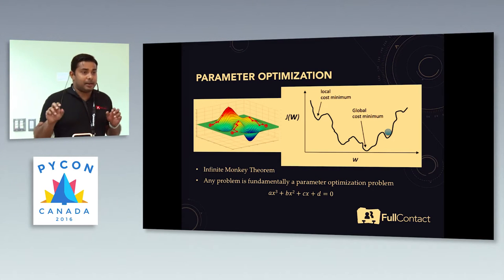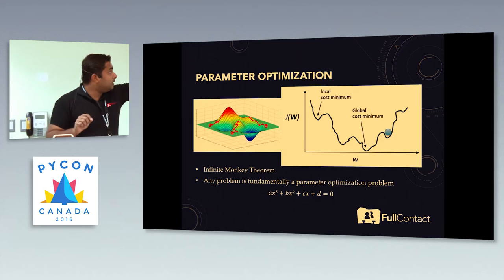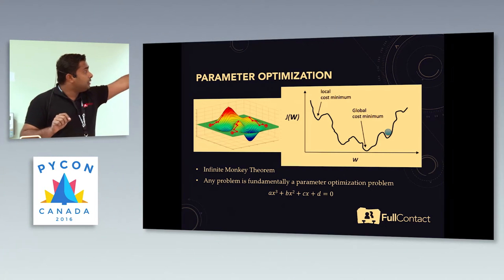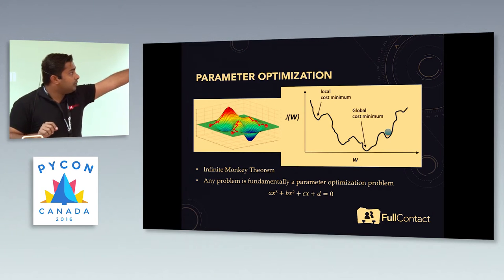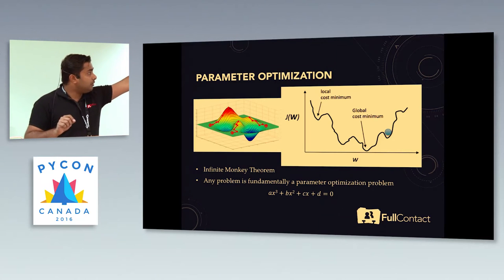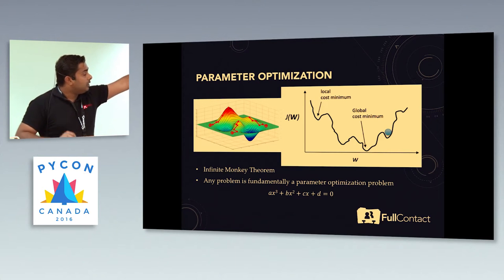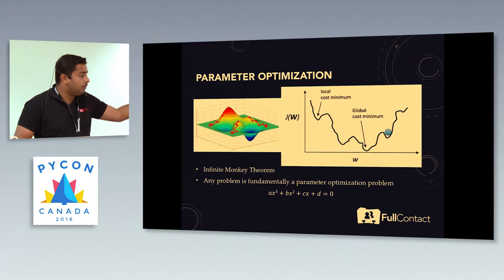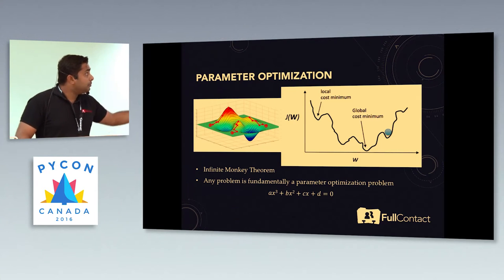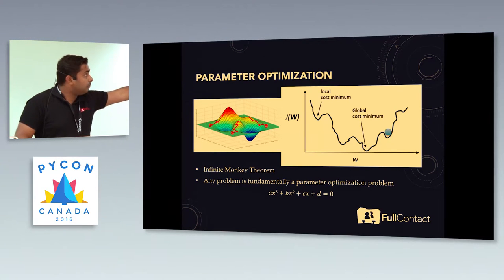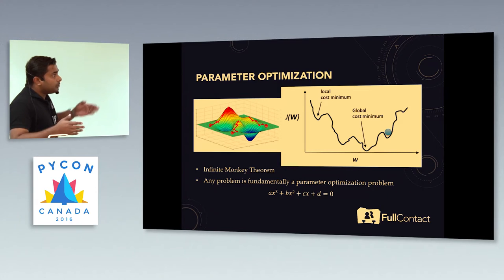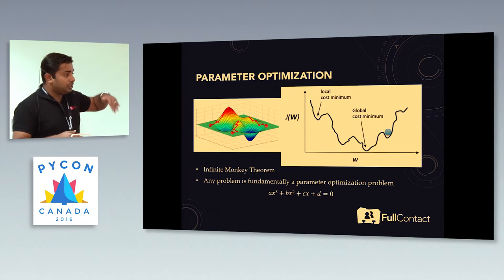If you look at the second image, you can see the blue dot which is not at the minimum. Basically, what parameter optimization does is move the value of that particular function to the minimum — the least value. The bottom is called the global cost minimum, so we have to actually move the entire function to the least value.